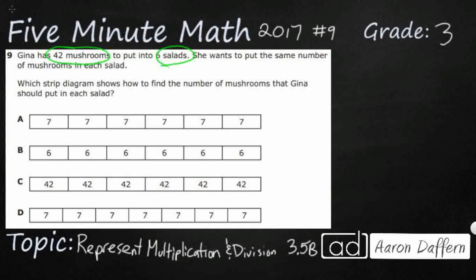So we've got a few things working here. First, when we're looking at the same number in each, that is giving us a clue that we are dealing with equal groups. Equal groups typically lead us to multiplication and division.